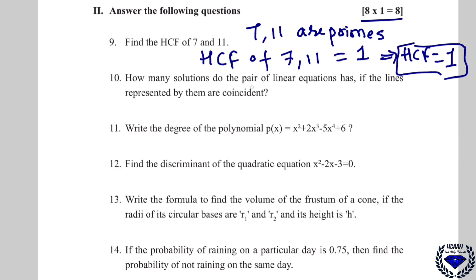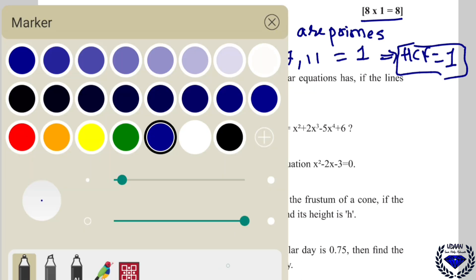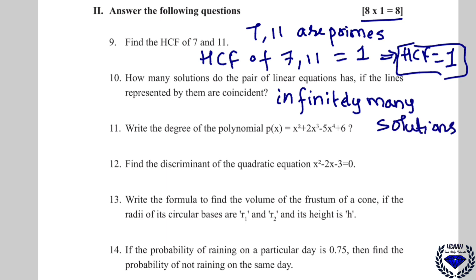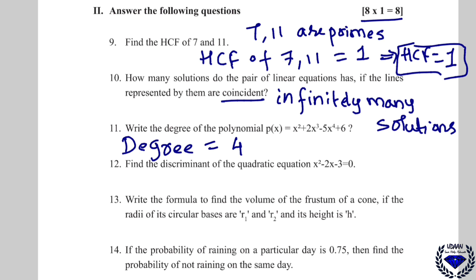How many solutions does a pair of linear equations have if the lines are coincident? If lines are coincident, they have infinitely many solutions. Next: write the degree of the polynomial x² + 2x³ − 5x⁴ + 6. The degree is the highest power of x, which is 4.